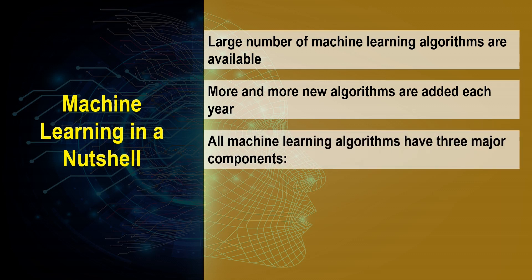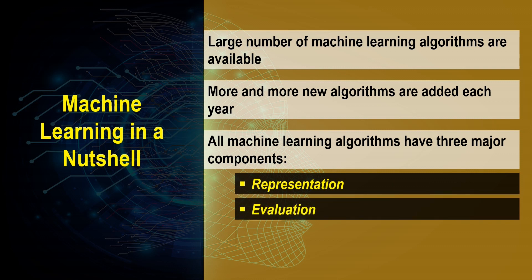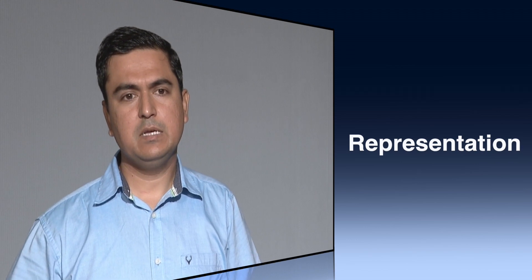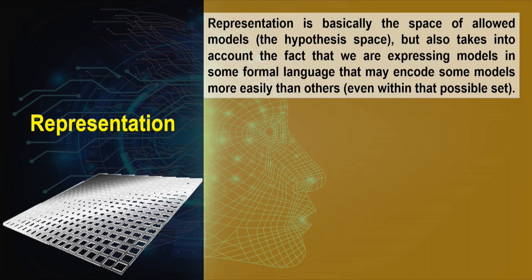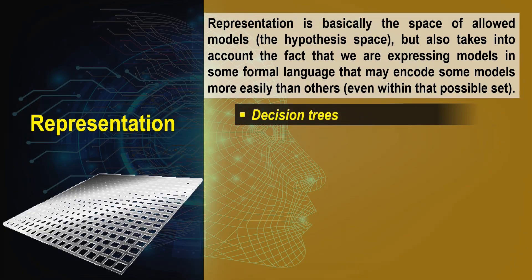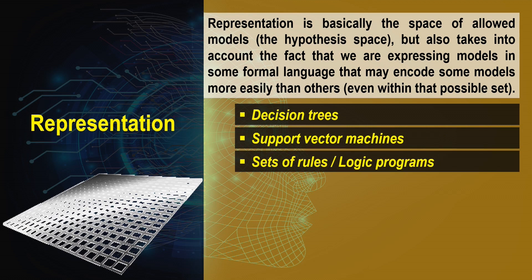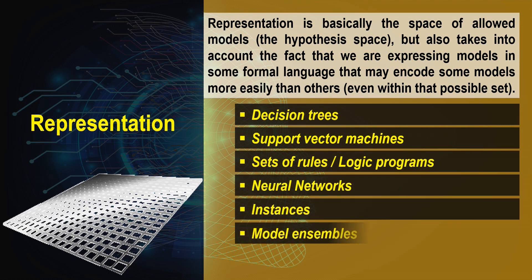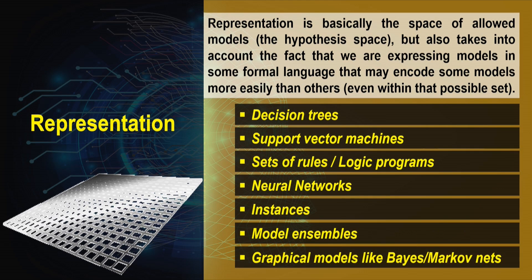There are three components in each machine learning algorithm: representation, evaluation, and optimization. Representation defines the space of allowed models — the hypothesis space — and the formal language used to express those models. Representation techniques include decision trees, support vector machines (SVM), rule sets, neural networks, instances, model ensembles, and graphical models such as Bayesian and Markov networks.